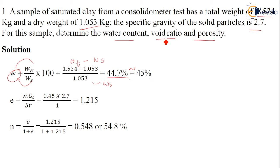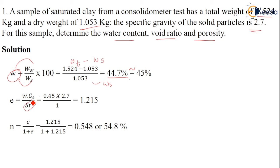The next quantity to find is void ratio. In the coming slides we will see how this relation is derived. There is a relationship between w and e: E is equal to W into Gs divided by Sr. Water content w is already calculated. Gs is given as 2.7. Since it is a saturated clay, Sr equals 1. Substituting all values, the void ratio E is 1.215.